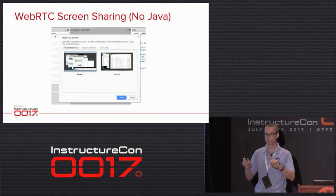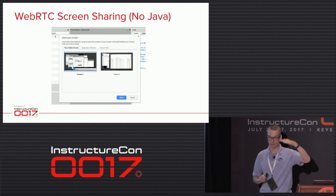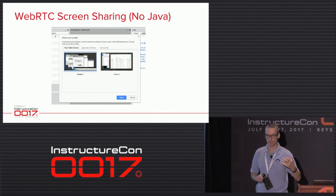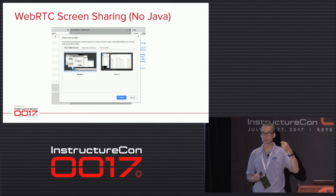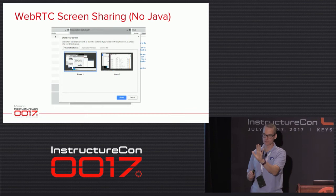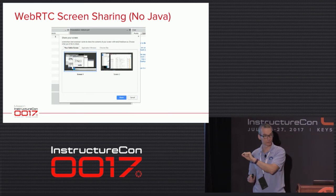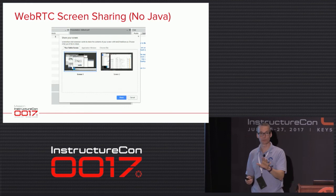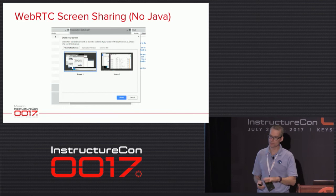Firefox and Chrome handle desktop sharing slightly differently. Chrome has you install an extension — about 30 lines of JavaScript — that confirms the user has given permission to share their desktop. You'll get a prompt, go to the Chrome Web Store, click install, and then you can do the desktop sharing. Firefox is straightforward — it'll ask whether you want to share an application or a window. We'll still have desktop sharing with Java as a fallback for Safari and IE users.